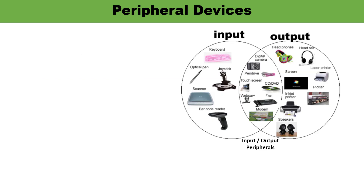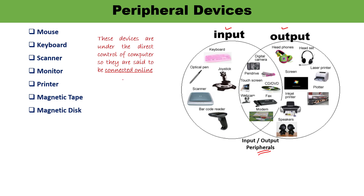In this particular diagram, you can see input devices, some of the output devices, and input-output peripherals. You can name many examples when explaining these. Since these devices are under the direct control of the computer, they are known as connected online devices.